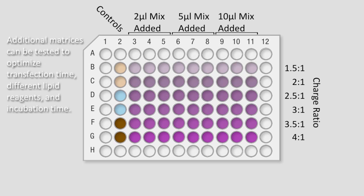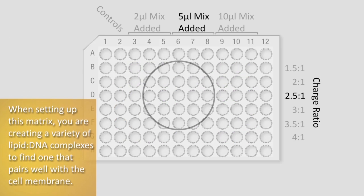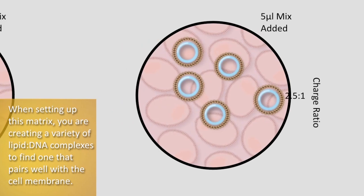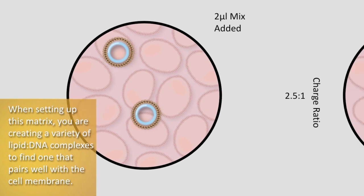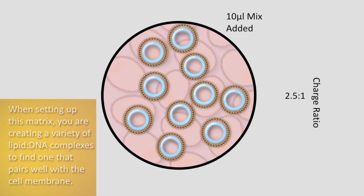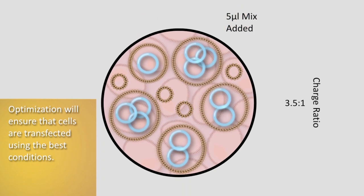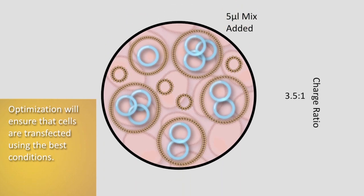Additionally, the length of time for transfection, a variety of lipid reagents, and incubation time for lipid-to-DNA complexes may be addressed. When setting up this matrix, you are creating a variety of lipid-to-DNA complexes to find one that pairs well with the cell membrane. A stronger net positive lipid-to-DNA complex charge may lead to greater transfection efficiencies, and optimization will ensure that cells are transfected using the best possible conditions.